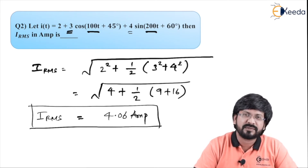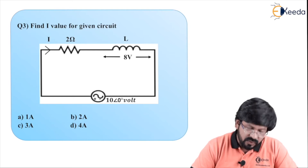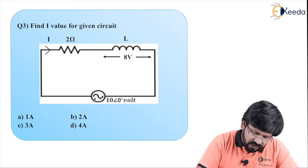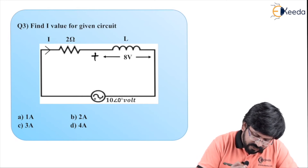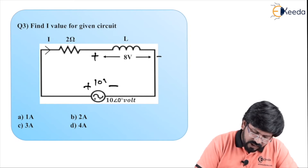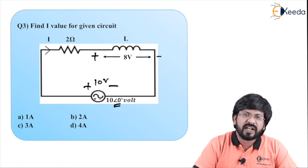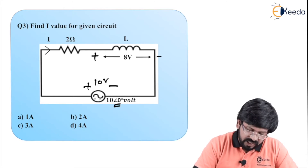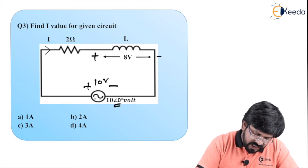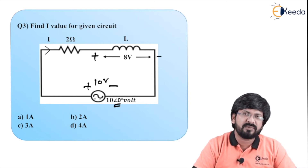This is how you handle finding V_RMS and I_RMS when a Fourier series is given. Let us move to Question number 3. It says find I value for a given circuit. As you can see it is a simple RL circuit where voltage across L is given as 8 volt and the supply voltage is given as 10 volt. You will have to find current I. Since it is a series circuit, the current through R and L will be the same.